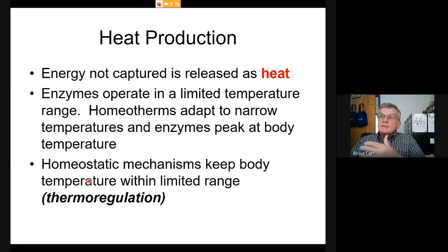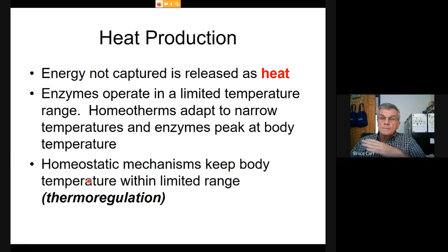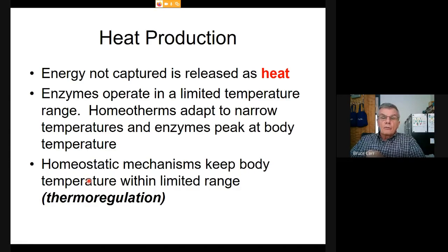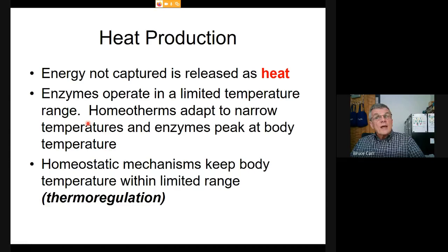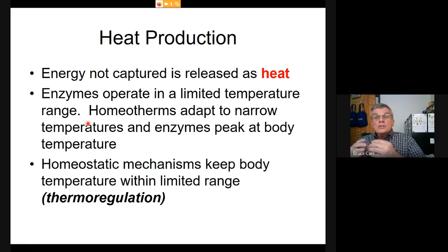Heat production: 60 percent of energy that is not captured as ATP is released as heat. In most organisms, that heat simply escapes from the cell into the environment. However, temperature has a chemical effect on metabolism: warm temperatures mean faster reactions; cold temperatures mean reactions slow down. Animals that cannot make body heat show their behavior change both daily and seasonally.